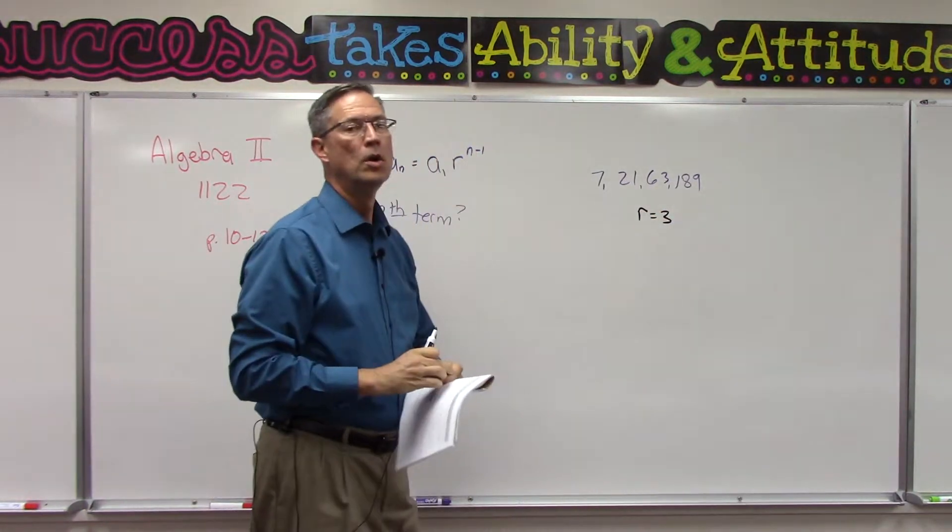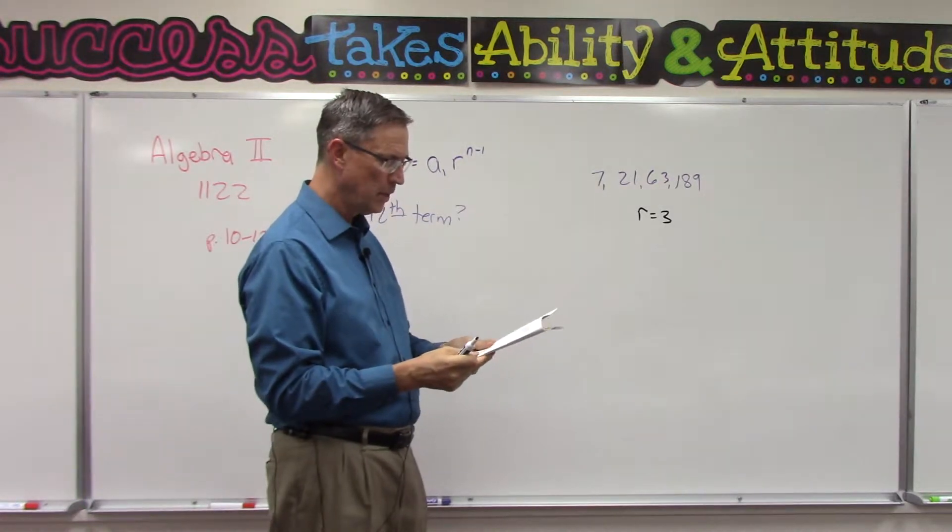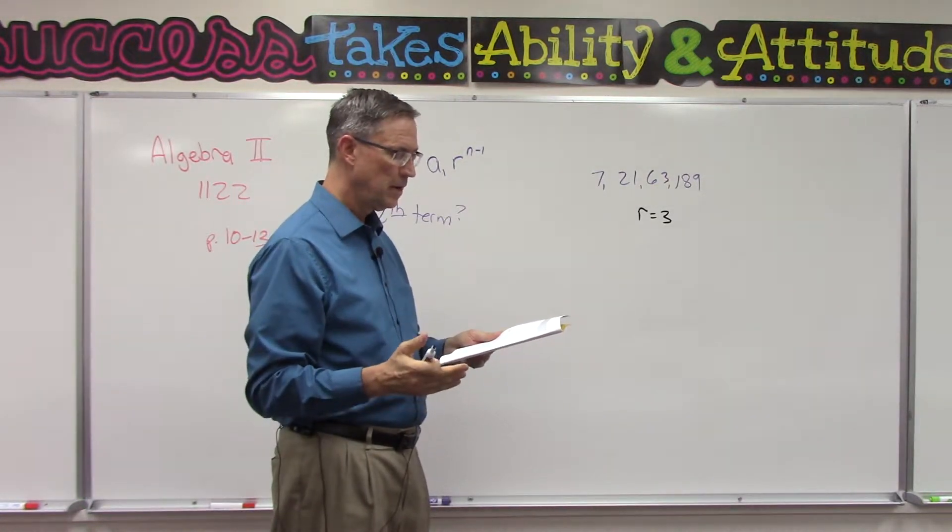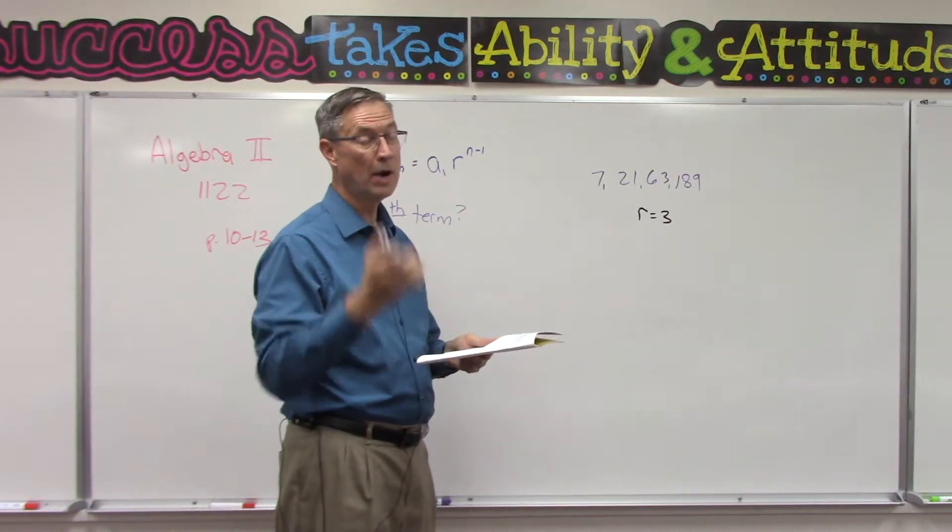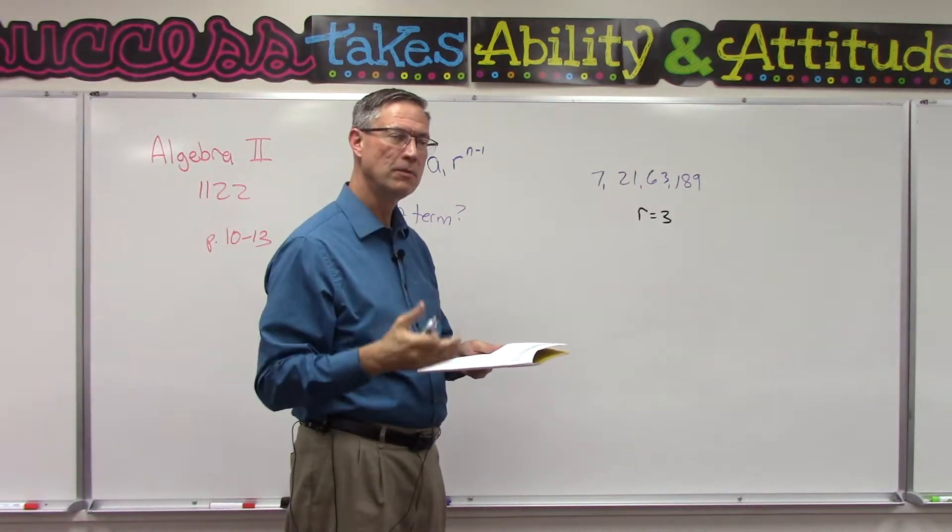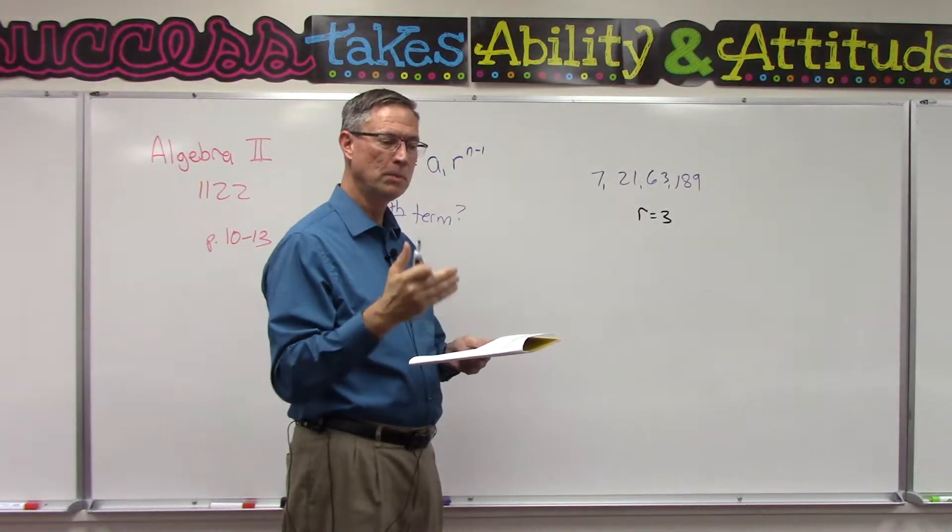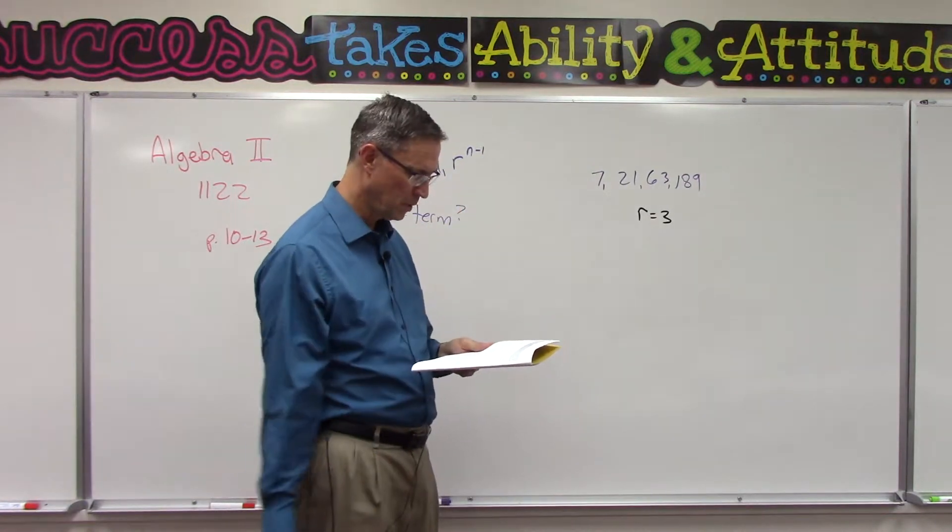So on page 10, they have you just finding the ratio. And remember, your ratio could be a fraction and could be a negative number, but the point is that if you multiply each term times that, you'll get the next term in the sequence, and the next term in the sequence, and the next term in the sequence. So try that on page 10.